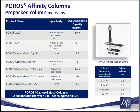Poros Capture Select Light Chain Kappa and Light Chain Lambda products allow for the analysis of human antibodies and antibody fragments containing either a Kappa or Lambda light chain. Finally, Poros Capture Select HSA is well-suited for the analysis of HSA fusion proteins and is specific for human serum albumin, allowing for use even in the presence of albumin from other species.